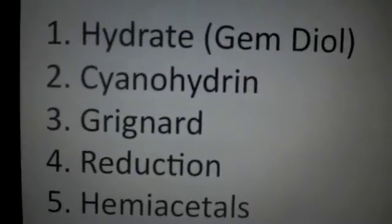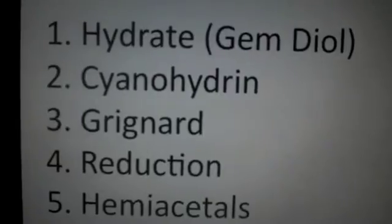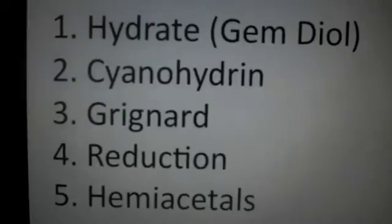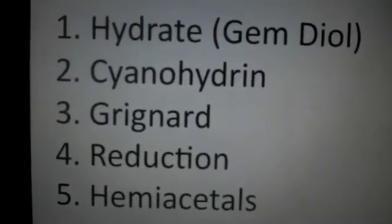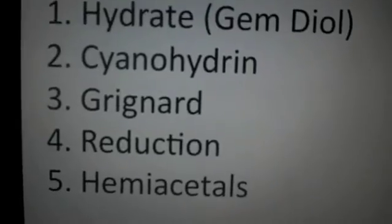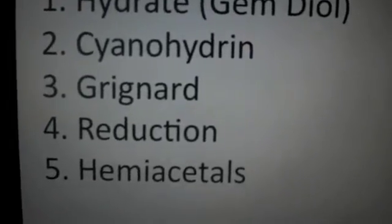The first one is a hydrate which would give us a gem diol. The second one is a cyanohydrin. Third one is a Grignard reaction with a carbonyl compound. Fourth one is a reduction using lithium aluminum hydride, and lastly, we're going to make a hemiacetal.